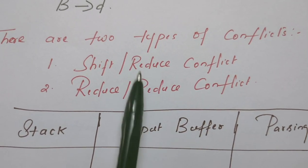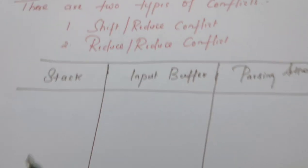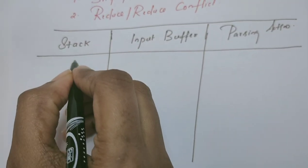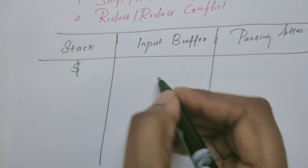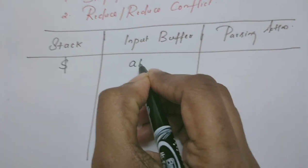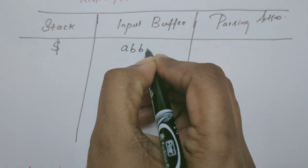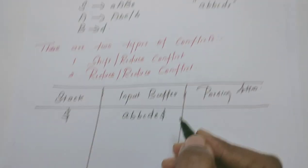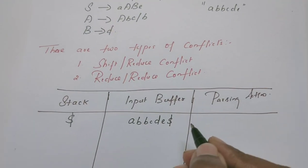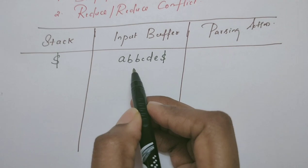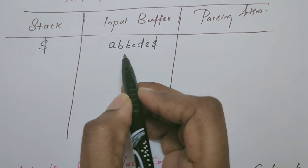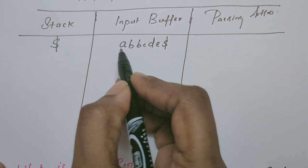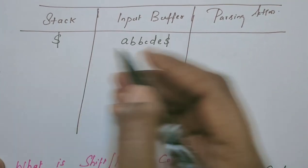We will understand these conflicts with an example. Now the stack is empty. The input buffer contains the string A, B, B, C, D, E, with a dollar sign at the end indicating the end of the string. The shift-reduce parser has to parse the string. When it sees A, it shifts A onto the stack.